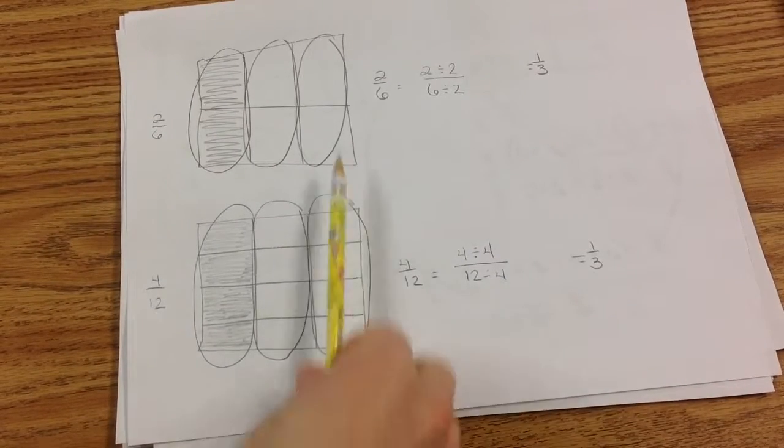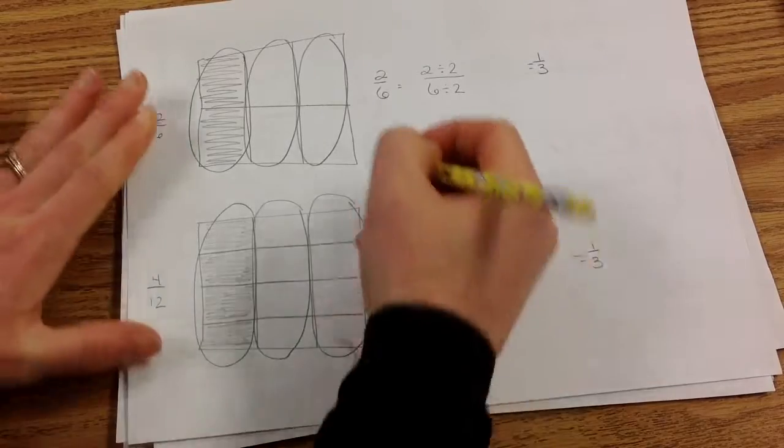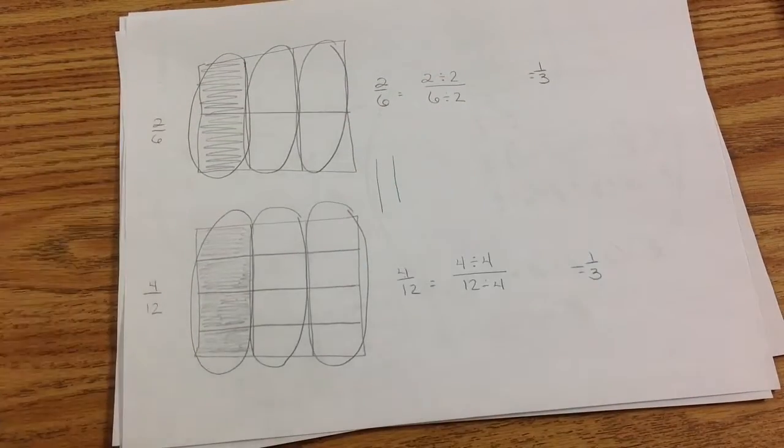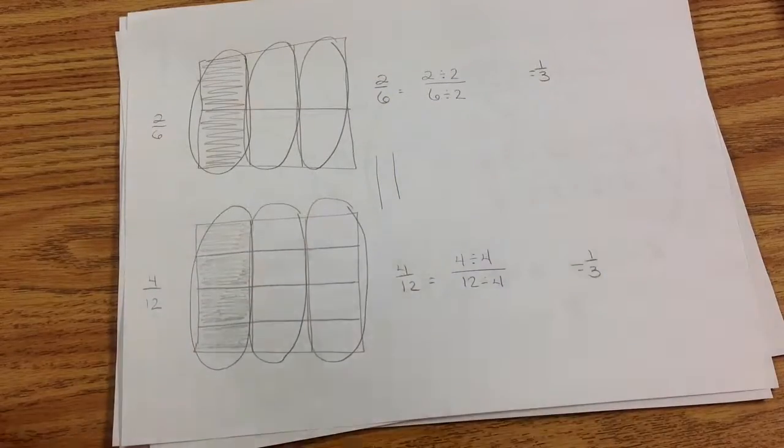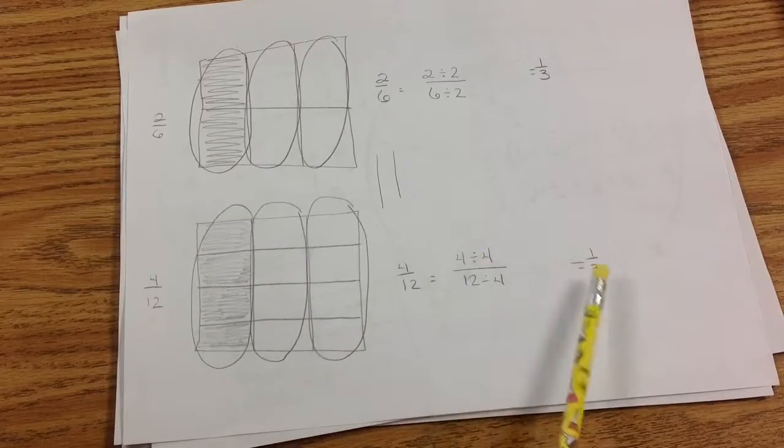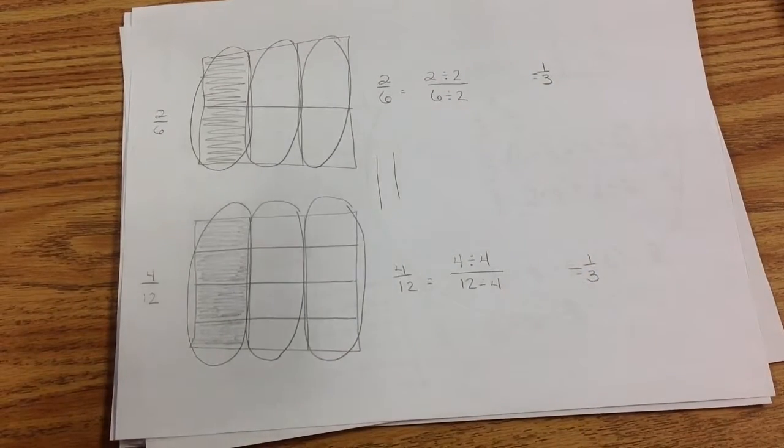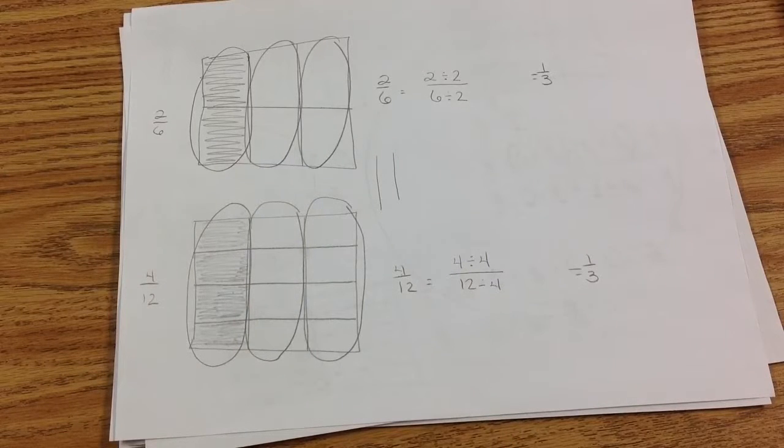Can you see a connection between 2 sixths and 4 twelfths? I hope you said they are equal because 2 sixths equals 1 third and 4 twelfths equals 1 third. So again, you can use division to find another fraction. We can use multiplication to find an equivalent fraction. We can use division. Go ahead and find a partner to do your problem set with and then your homework. Good luck!